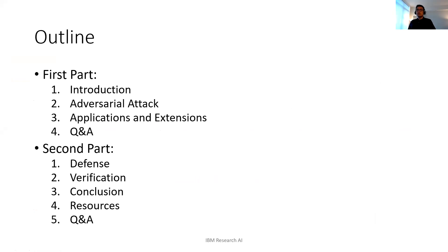Here is the outline of the tutorial. It will be divided into two parts. We will start by introducing what is universal robustness and show you the basic ideas and recent progress for adversarial attacks and its applications to other machine learning problems. We will also talk about defense and verification and conclude the tutorial. I will also share some resources helpful for beginners, and then we will have live Q&As.